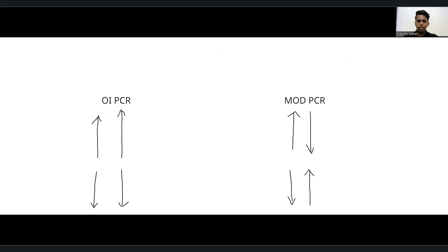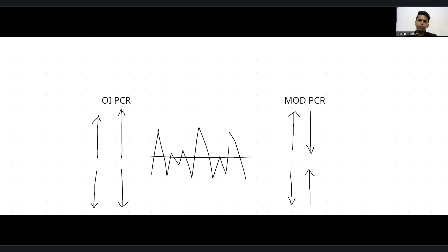To summarize: the common characteristic of all PCRs is mean reverting in nature. OI PCR is positively proportionate with future price — if OI PCR starts rising, that is a bullish confirmation for that index or stock. Modified PCR is inversely proportionate with future price — if modified PCR falls down, that will be a bullish confirmation for the market.